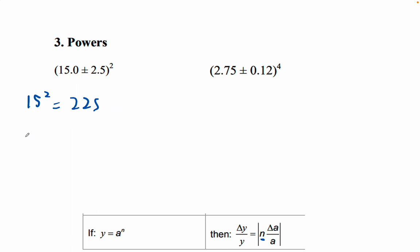Okay, so now I'm going to go the uncertainty of, here you're using Y, I'm using X, I don't know why. 225 is equal to the absolute value of 2 times 2.5, that's the uncertainty of it, divided by 15.